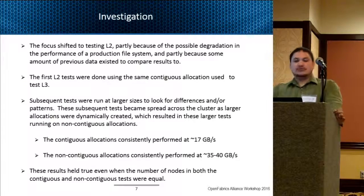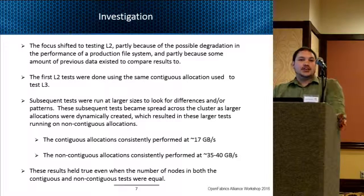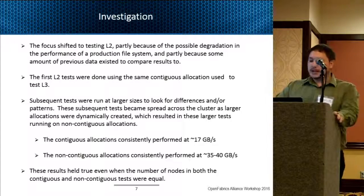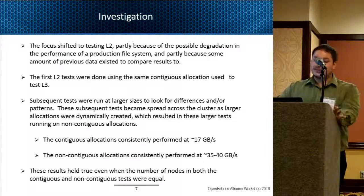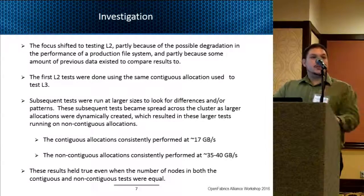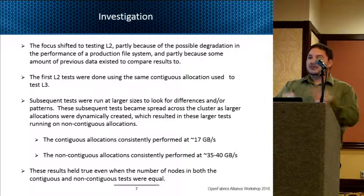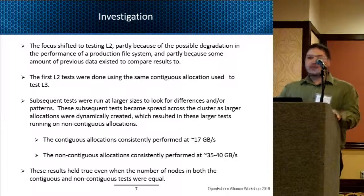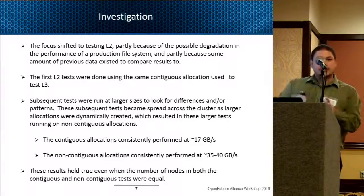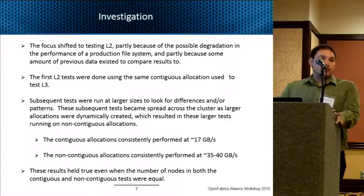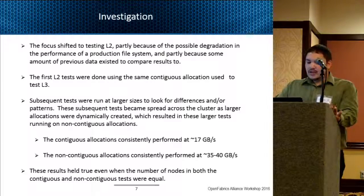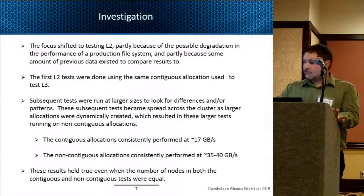Our testing shifted to L2. We started focusing on how our nodes were allocated on the fabric itself and realized that most of our testing during dedicated downtime had nodes that were all contiguous on the fabric — on the same line card, or pretty contiguous depending on job size. As we started testing with users in production, we were getting allocations that were more non-contiguous across the fabric, and that's when we started seeing better performance — between 35 and 40 gigabytes a second. We realized that whether nodes were contiguous or non-contiguous was having a huge impact on performance with the Lustre file system.